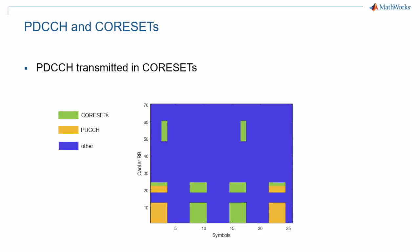PDCCH is transmitted within a core set. The picture here shows the core set in green, and the PDCCH may occupy part or all of the core set frequency locations at defined time instants.